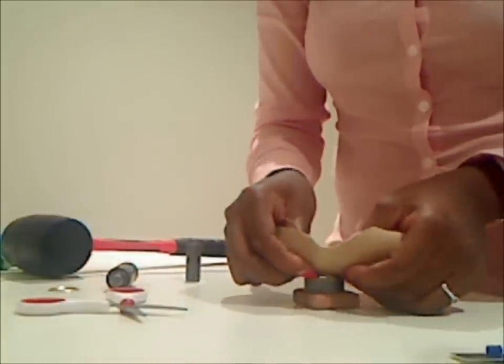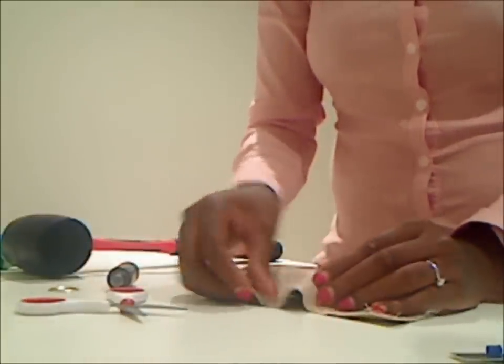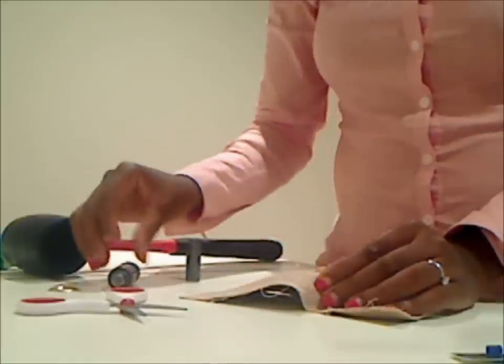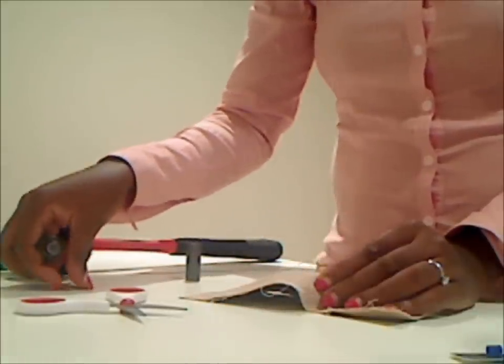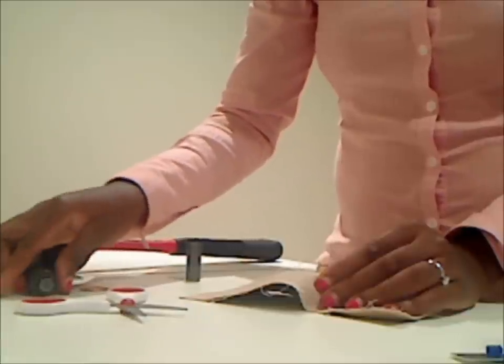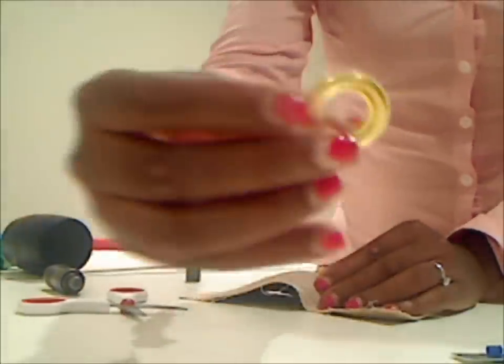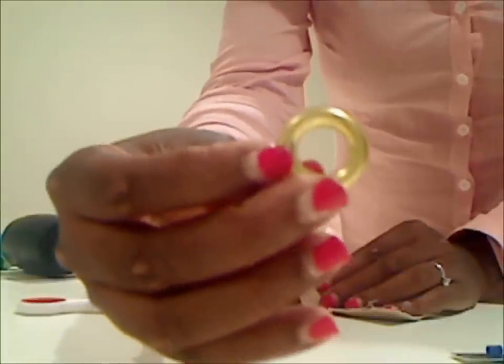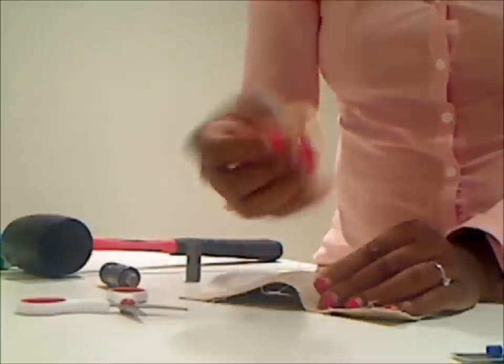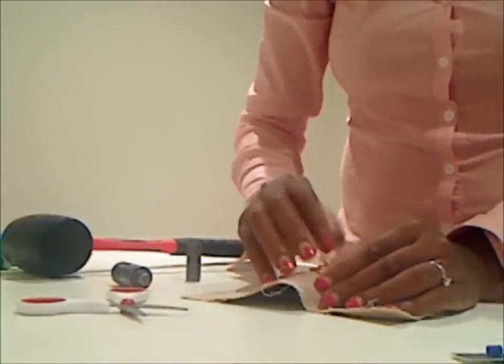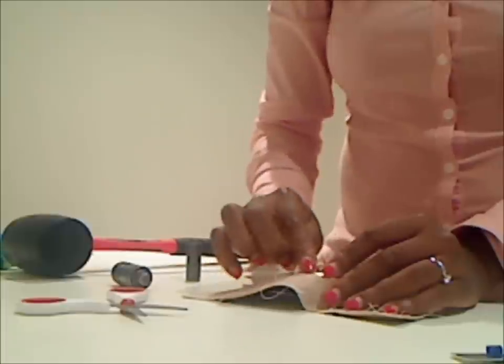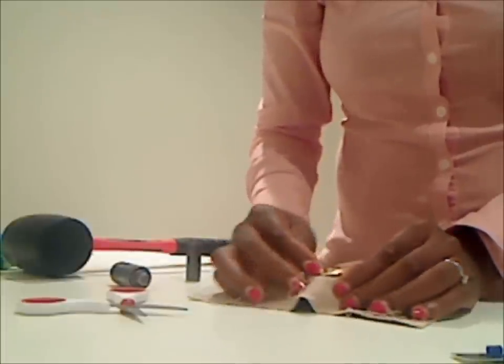And you want to place that onto your anvil. You then want to place this part of your grommet on top with the curved side facing upwards, like so.